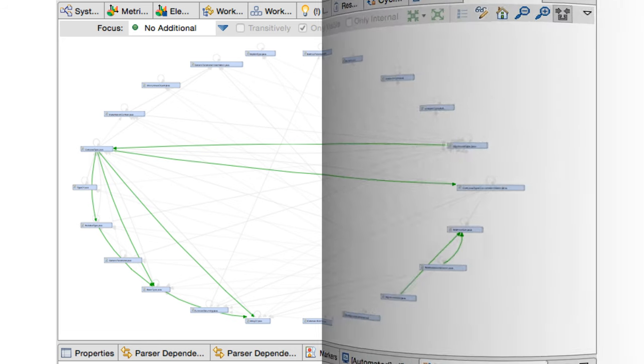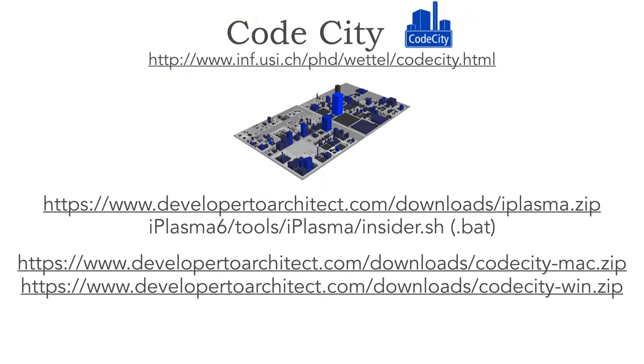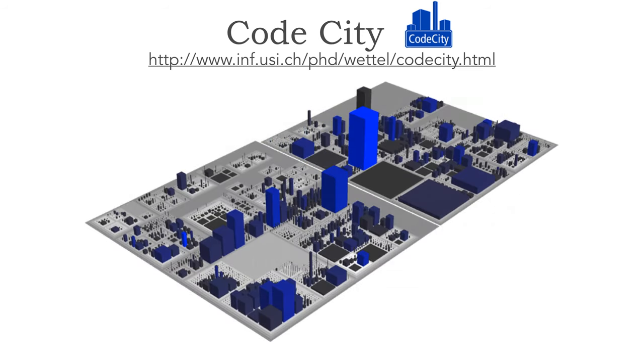A third tool that I don't like as much, but I'll still show it to you, is something called CodeCity. CodeCity is written in Smalltalk, and as such, requires an upload of a moosefile.mse file, and that's what iPlasma does. I've provided the link here to where you can download iPlasma from my website. I'll run insider.shellscript or bat and point it to the root directory, and what that gives you is your application as a city landscape.